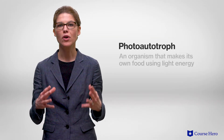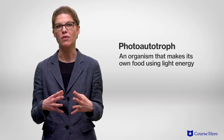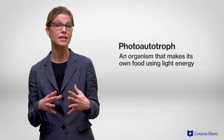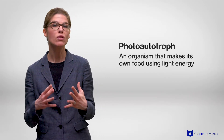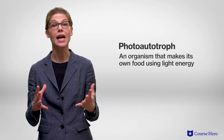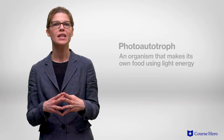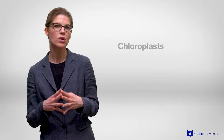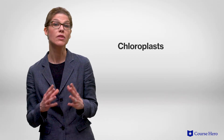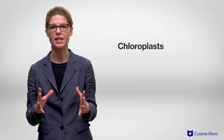All living things require energy to carry out the functions of life. A photo-autotroph is an organism that makes its own food using light energy. It does this through a process called photosynthesis.